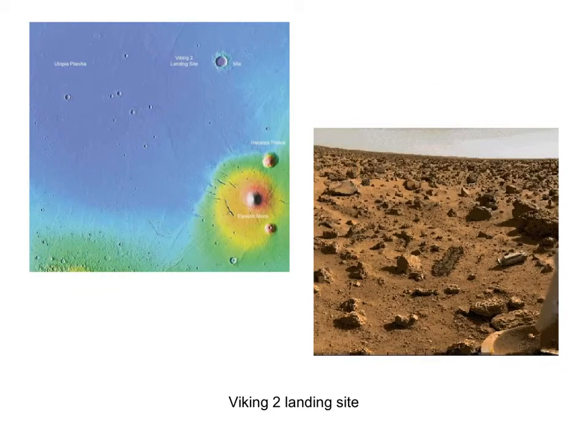Viking 2 came down a little later in Utopia Planitia, much further north, away from the equator compared to Viking 1, but very similar. These are pretty boring sites. The first time you land on Mars — you've spent all this money to build these landers — why pick a boring site?